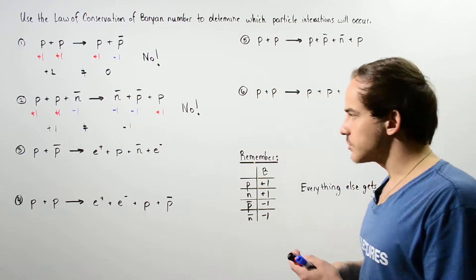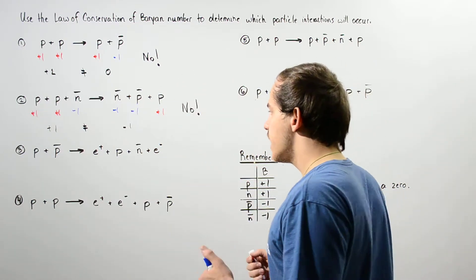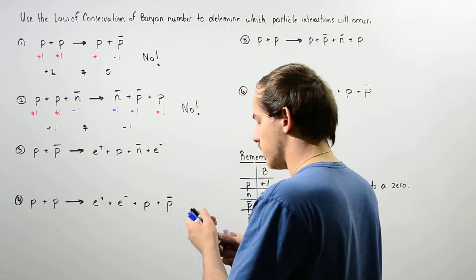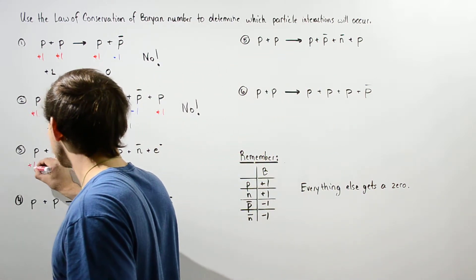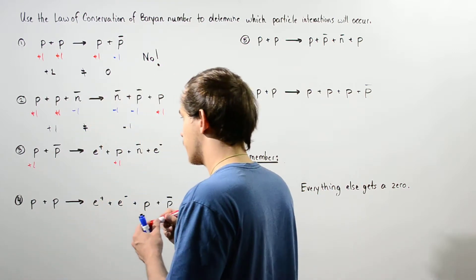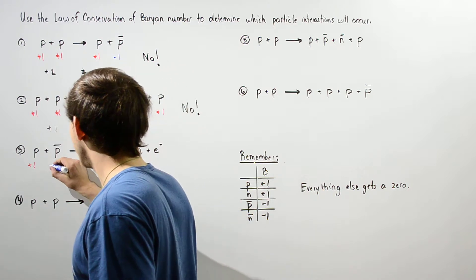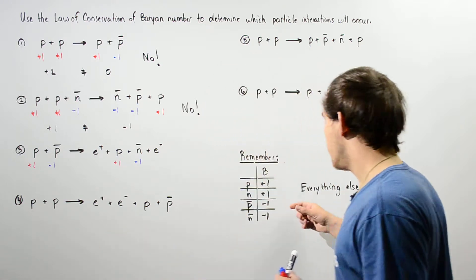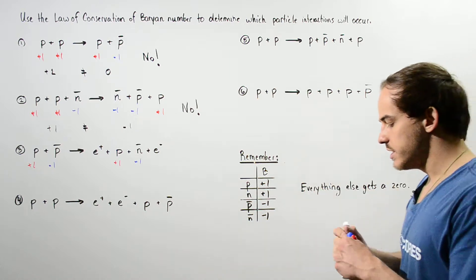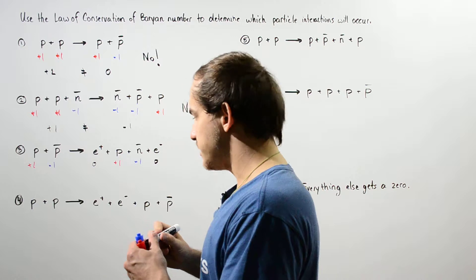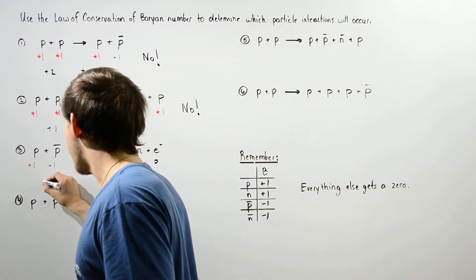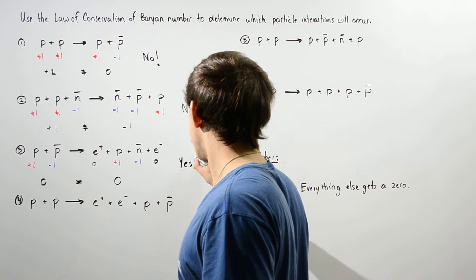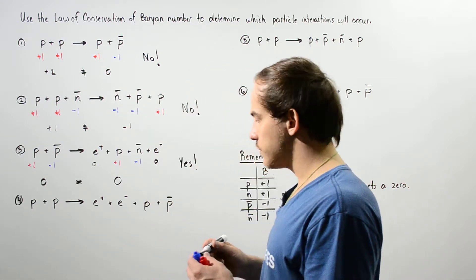Let's move on to the third interaction. We have a proton interacting with an antiproton, producing a proton, an antineutron, a positron, and an electron. The protons each get a positive one, and the antiparticles each get a negative one. The positron and electron are in the 'everything else' category, so they both get zero. Both sides have a baryon number of zero, so this reaction does take place according to the law of conservation of baryon number.